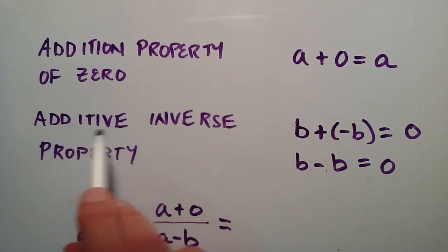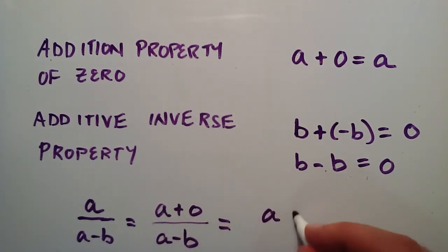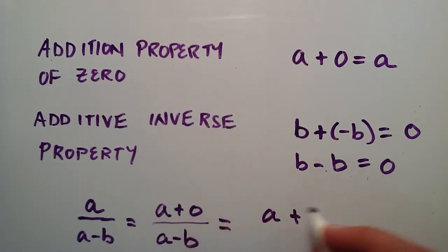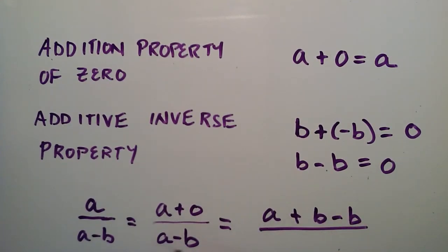And now we're going to use the additive inverse property. And so basically this zero is the same thing as b minus b. So we're going to write that as a plus, and then our zero is going to be b minus b. And that's still all divided by a minus b.